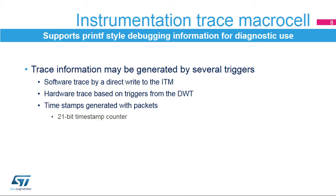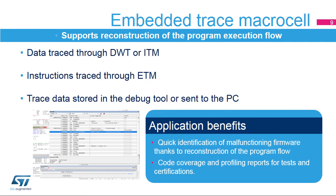It also provides a timestamp from the 21-bit counter. The Embedded Trace Macrocell, or ETM, provides information about the execution flow of the application by tracing data through the DWT or ITM, and tracing instructions through the ETM. This information is then sent to the debugger host for processing, allowing the debugger to completely reconstruct the execution flow. It is very useful to quickly identify bugs and also generate code coverage and profiling reports, which are used for test purposes and certifications.